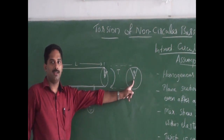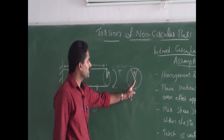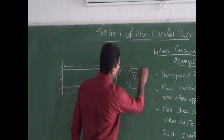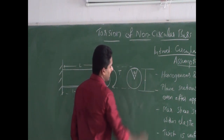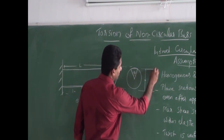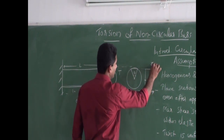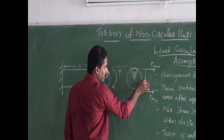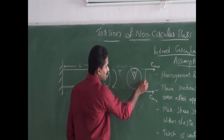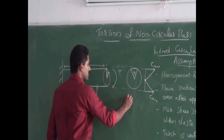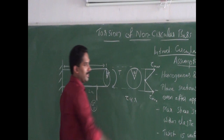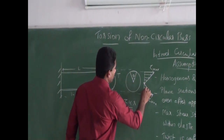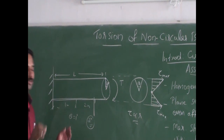The center point has minimum shear stress equal to zero, while the maximum shear stress is at the outer fiber — that is tau max. The variation of shear stress from the center to the outer fiber is linear, meaning shear stress is directly proportional to the radius or radial distance from the center.